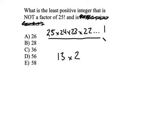This big number in here has at least one 13, right? And at least one 2. So yes, 26 will be a factor of 25 factorial. It's out, because we're looking for which one is not.